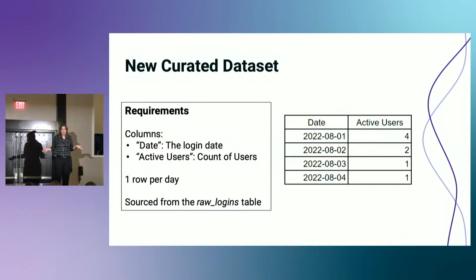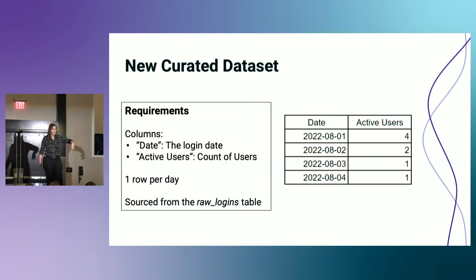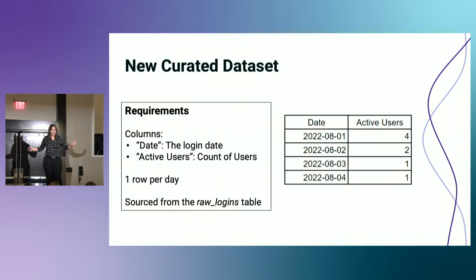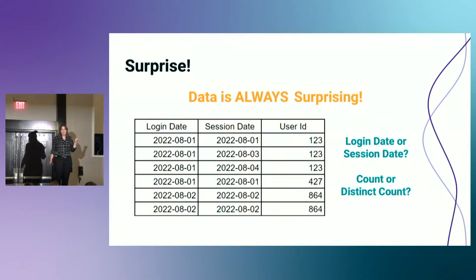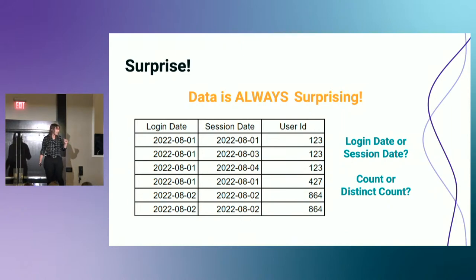So we've figured out what we want, and we write up our requirements. I want this kind of table — it's got to have a date field, I need to have active users, and I drew a pretty picture so I know exactly what it's going to look like at the end. And then the data surprises you. I think every time I've built a model, something happens that I'm not expecting.